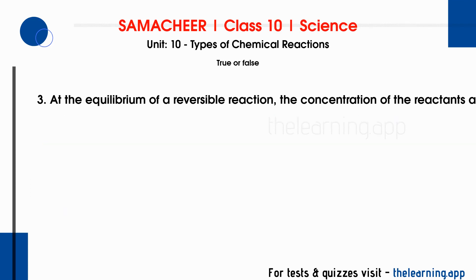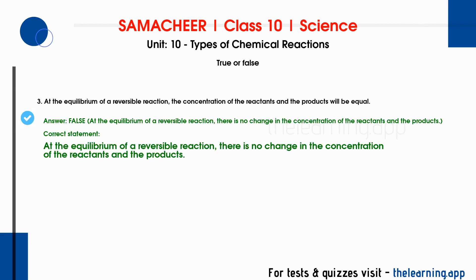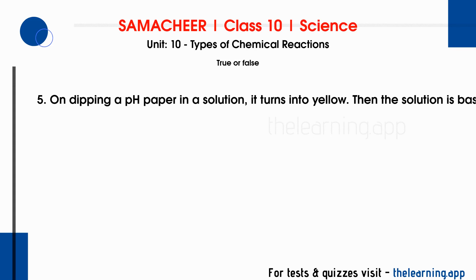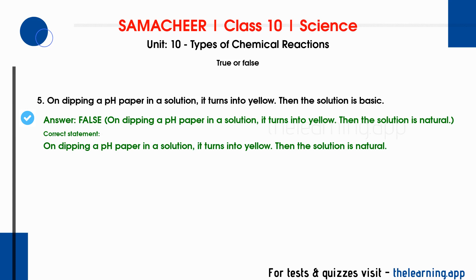Third true/false statement: At the equilibrium of a reversible reaction, the concentration of the reactants and products will be equal. This is false. The correct statement is: at equilibrium of a reversible reaction, there is no change in the concentration of reactants and products. Fourth: Periodical removal of one of the products of a reversible reaction increases the yield. This is true. Fifth: On dipping a pH paper in a solution it turns yellow, then the solution is basic. This is false — a yellow pH paper indicates a neutral solution, not basic.